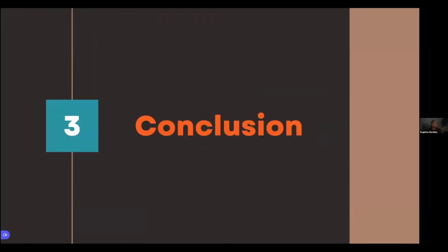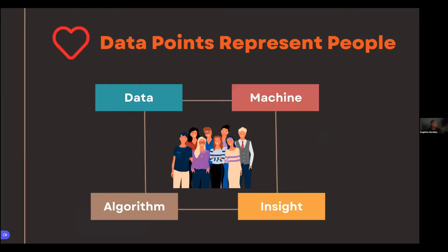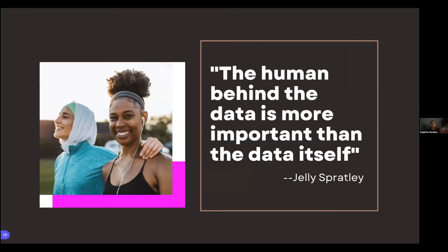In conclusion, because we looked at scenarios about the humans behind the data point, I hope to drive home the point: data points represent people. I know you see the Excel sheet or CSV in front of you, so it's hard to look at every row as a human. But if you think of it that way, you'll be able to ask questions about ethics around your data and look out for biases sooner in the CRISP-DM process rather than later. I'd like to leave you with this quote: the human behind the data is more important than the data itself. That was our quick tech talk about the human story behind the data point.